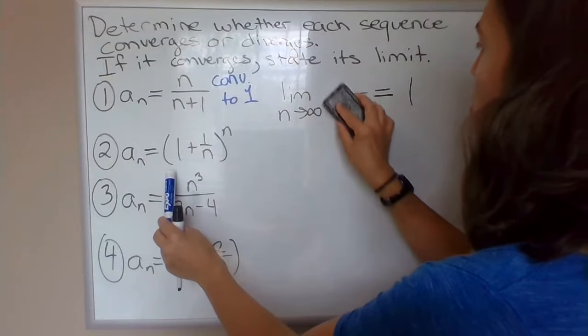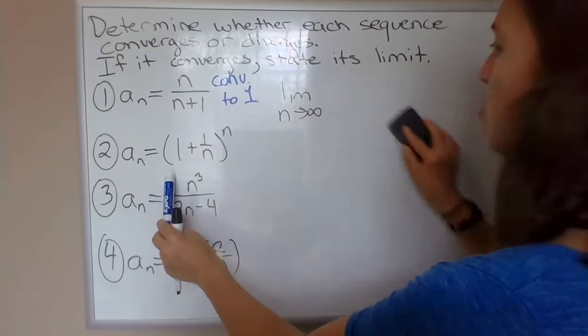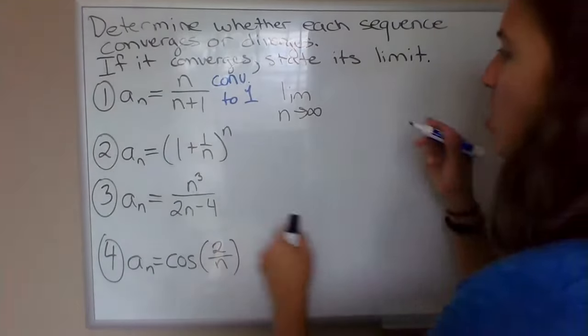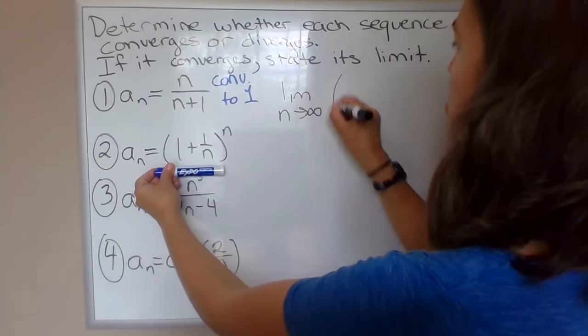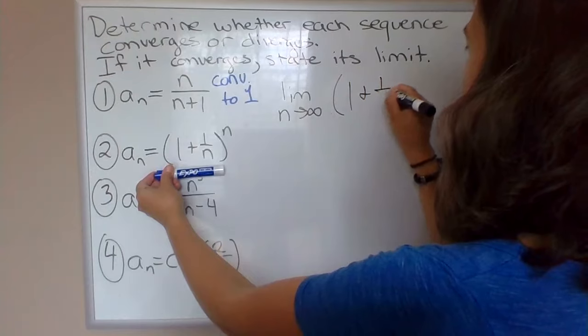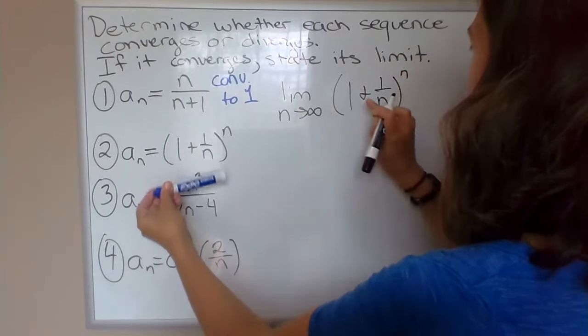So example 2. We want to determine whether this sequence converges or diverges. So now we should take the limit of these terms: 1 plus 1 over n to the n.